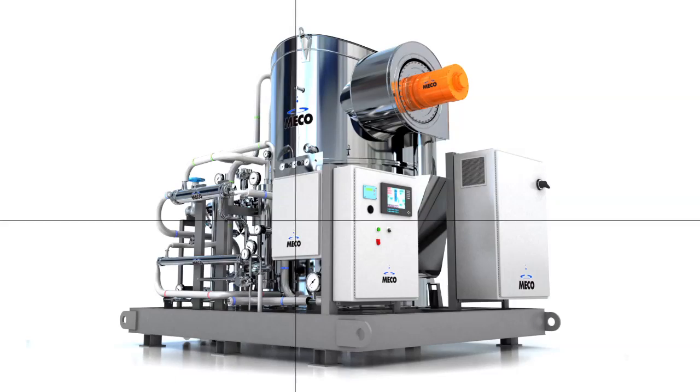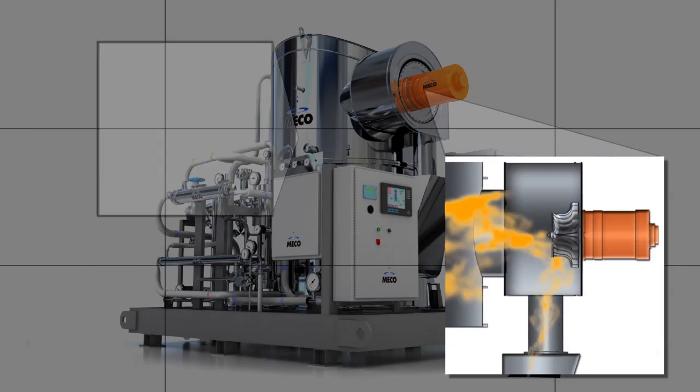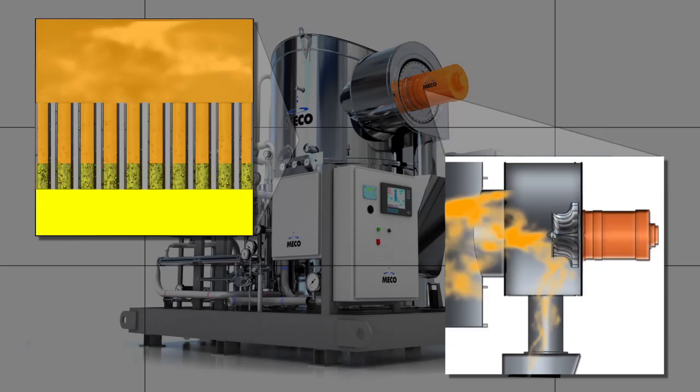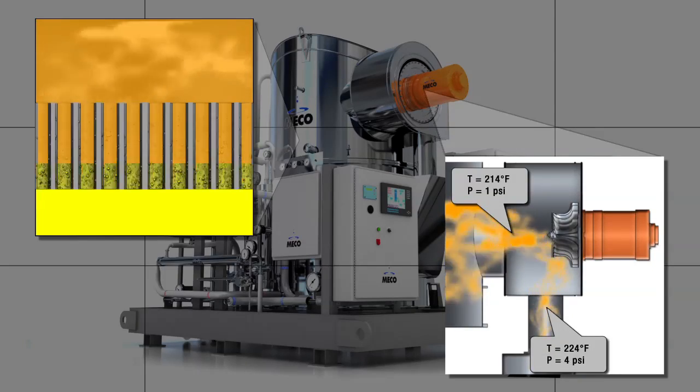Vapor compression is a distillation process that compresses and condenses evaporated feed water to form distillate. Since compression increases both the pressure and temperature of the vapor, latent heat rejected during condensation can be used to generate additional vapor.